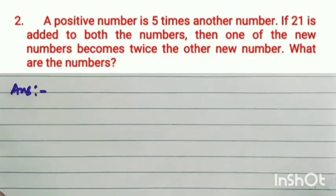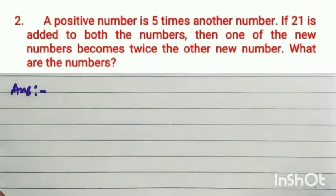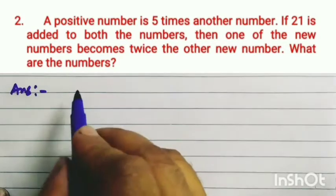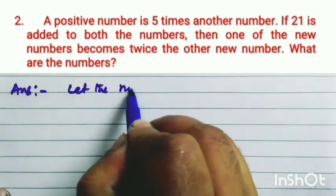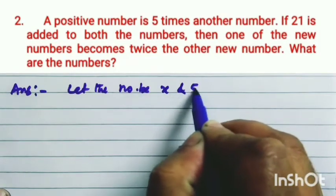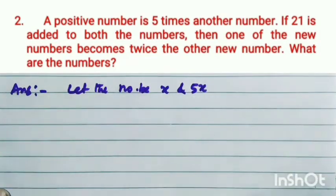Now, exercise 2.4 question number 2. A positive number is 5 times another number. If 21 is added to both the numbers, then one of the new numbers becomes twice the other new number. What are the numbers? At first, let the number be x and 5x. Why x and 5x? Because it is given in the question that a positive number is 5 times another number.